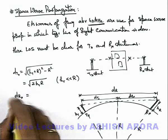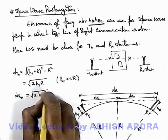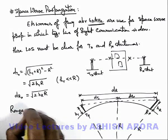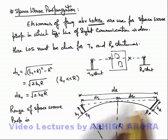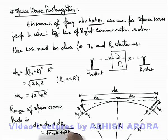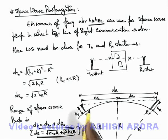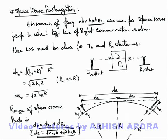Similarly, d-r-x, the distance of the tangential point of earth from the line of sight to the receiving antenna, can be directly written as root of 2·h-r·r. So the total range is d-t-x plus d-r-x, which equals root of 2·h-t·r plus root of 2·h-r·r. This will be the range of the space wave communication system if height of transmitting antenna is h-t and height of receiving antenna is h-r, and if the line of sight is adjusted such that at one point it is almost tangential to the earth's surface, slightly above the population density on the earth's surface so that the line of sight will not be hindered.